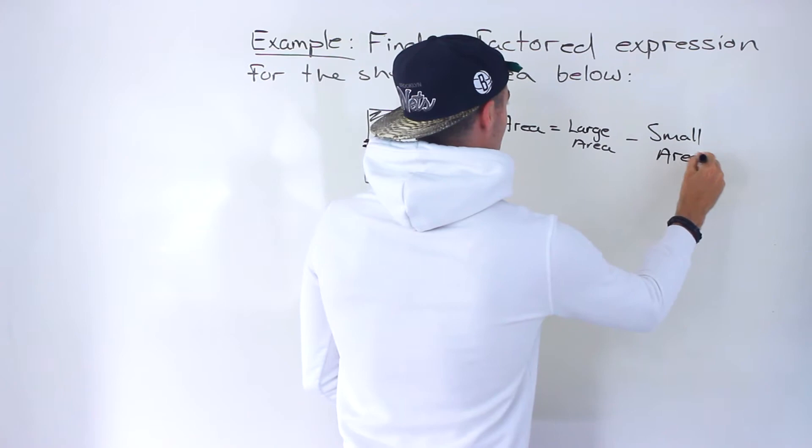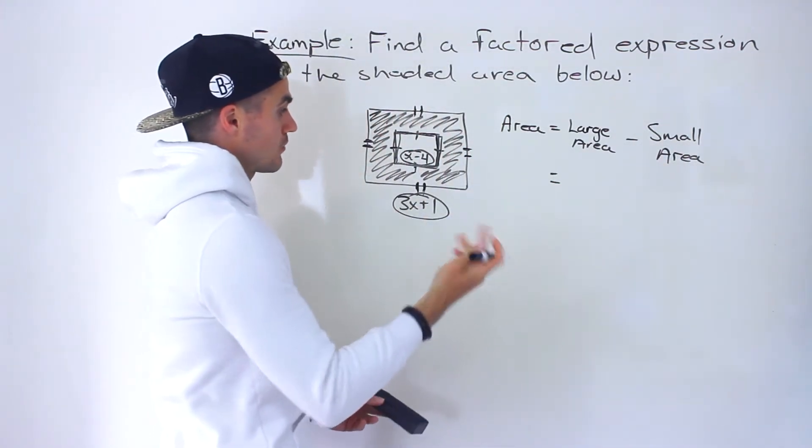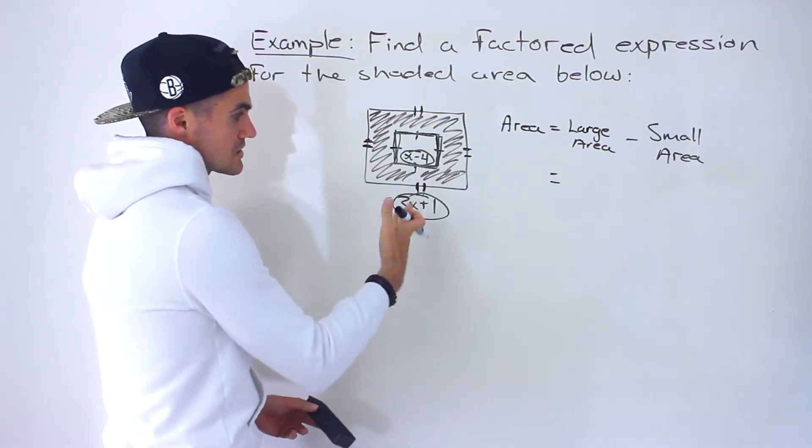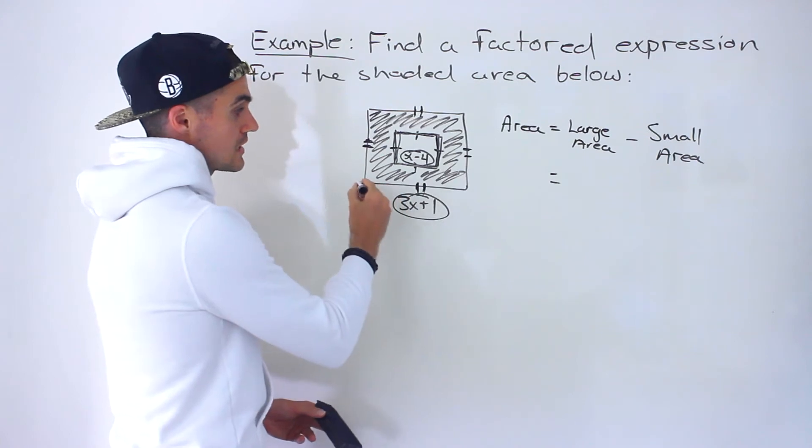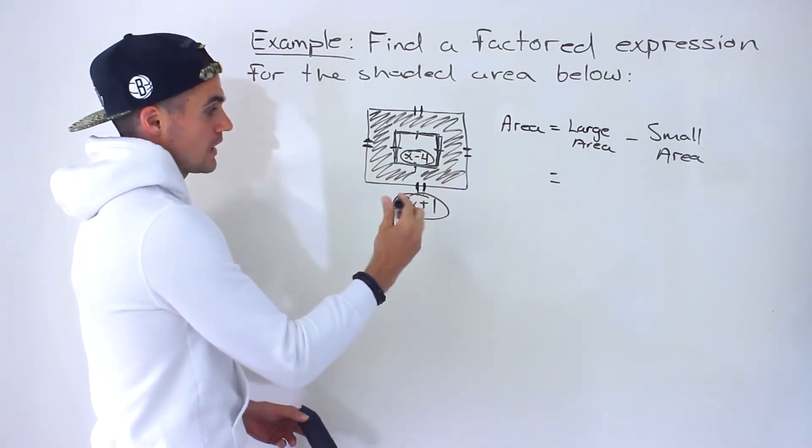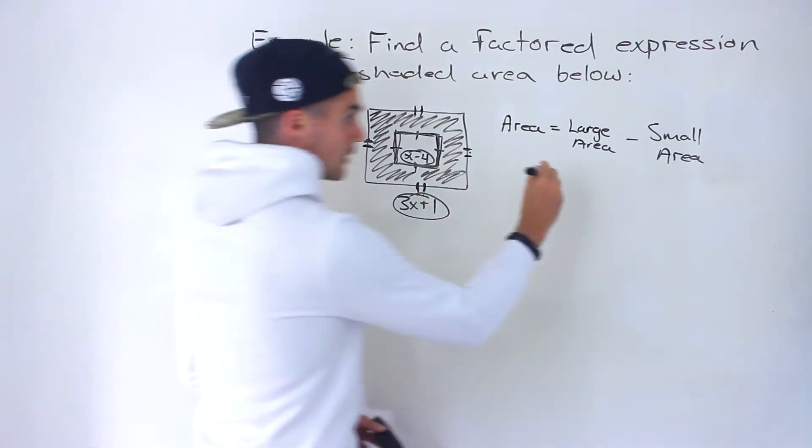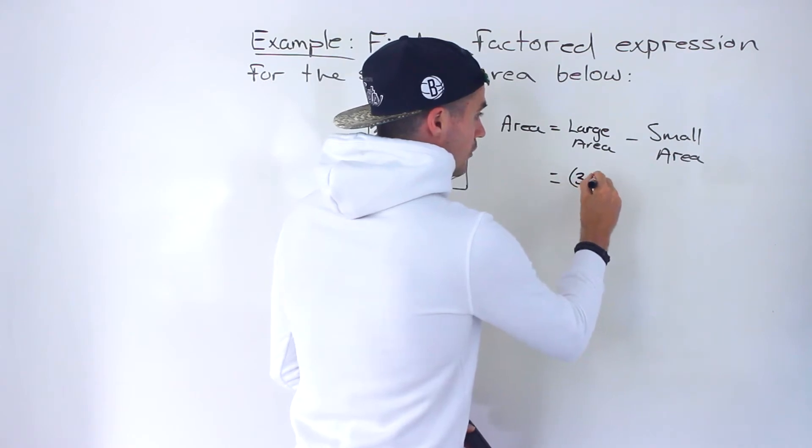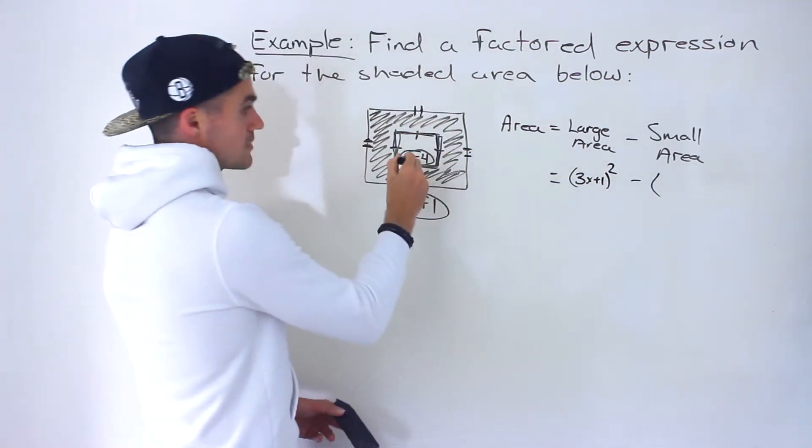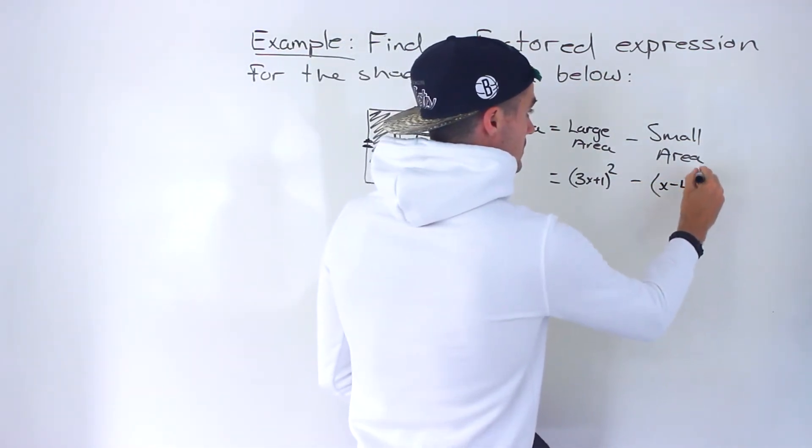The area of a square in general is the length times the length. It's length times width, but because the length and the width are the same, it's just the length times length, or the side squared. So the large area here is going to be 3x plus 1 times 3x plus 1, or (3x+1)², minus the small area which is (x-4)².